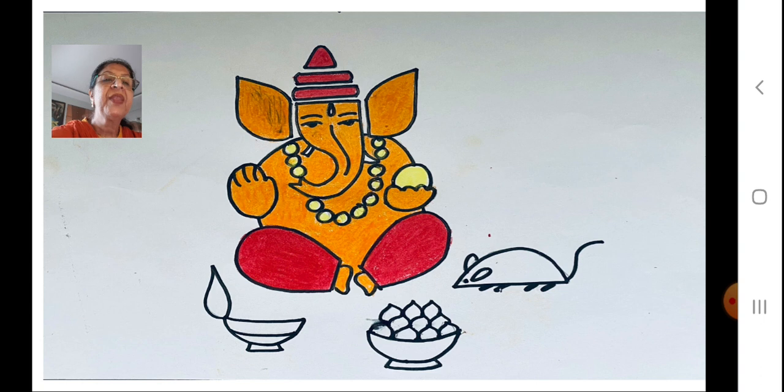Now you can see. I have colored Ganapati. The body is orange color. Which color? Orange color. Yes. And the legs and the crown part you can do red color. If you want to change the colors, you are most welcome to do it. And the mala and the laddu is yellow in color.